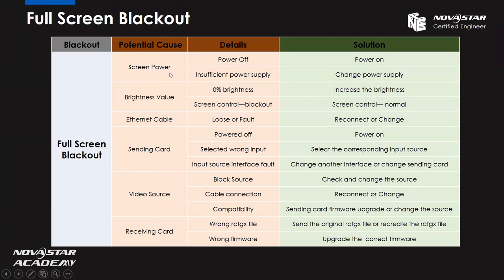For screen power, the simplest but most overlooked problem is the power — make sure your screen is powered on. If there is insufficient power supply, we need to change the power supply. For brightness value, sometimes the brightness of our screen is 0%, so we need to increase the brightness, maybe to 50%, either in our software or on the front panel of the sending controller.